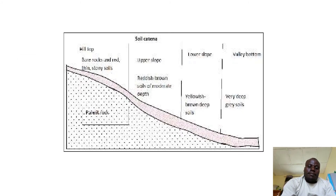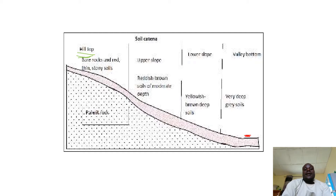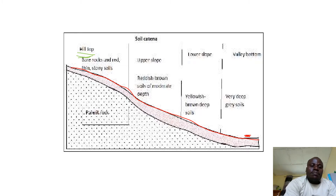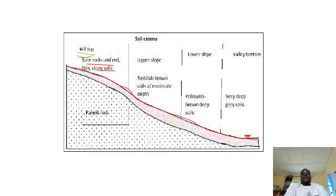This diagram may help us. It shows changes that take place in the soil from the top to the bottom of the slope. This is the hilltop, and this is the valley. The gradient keeps on reducing as you move from the top to the valley. At the hilltop, we have bare soils, bare rocks — rocks without even vegetation. These are seen as stony soils. The soils are bare, not covered by vegetation because of forces of erosion.